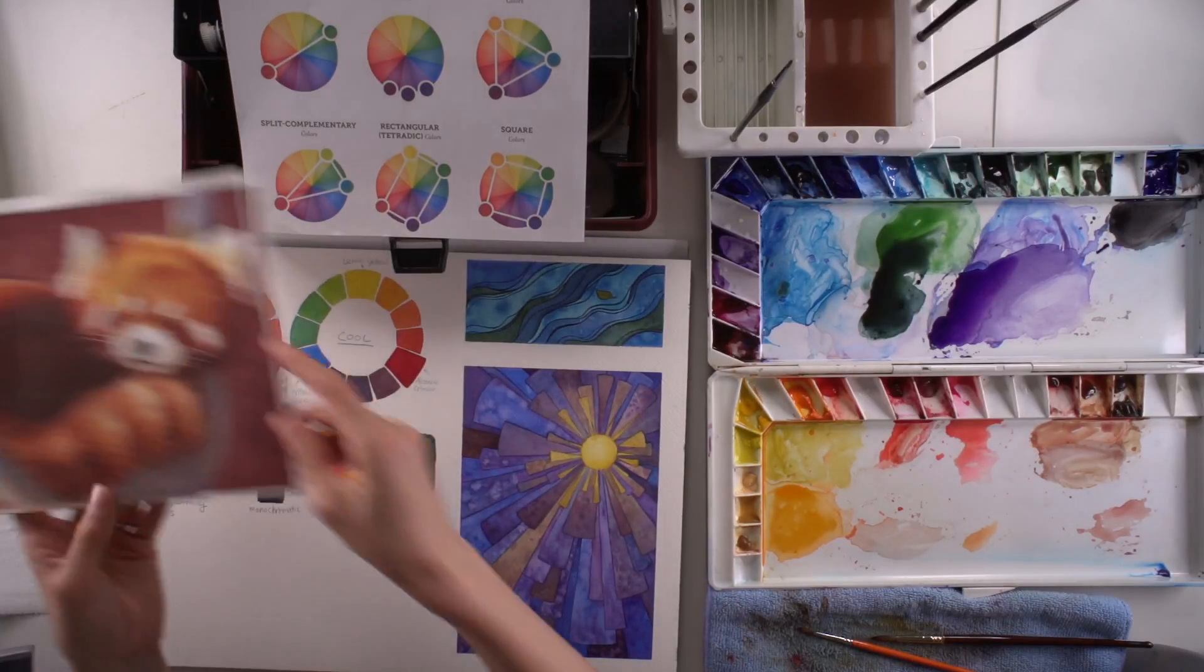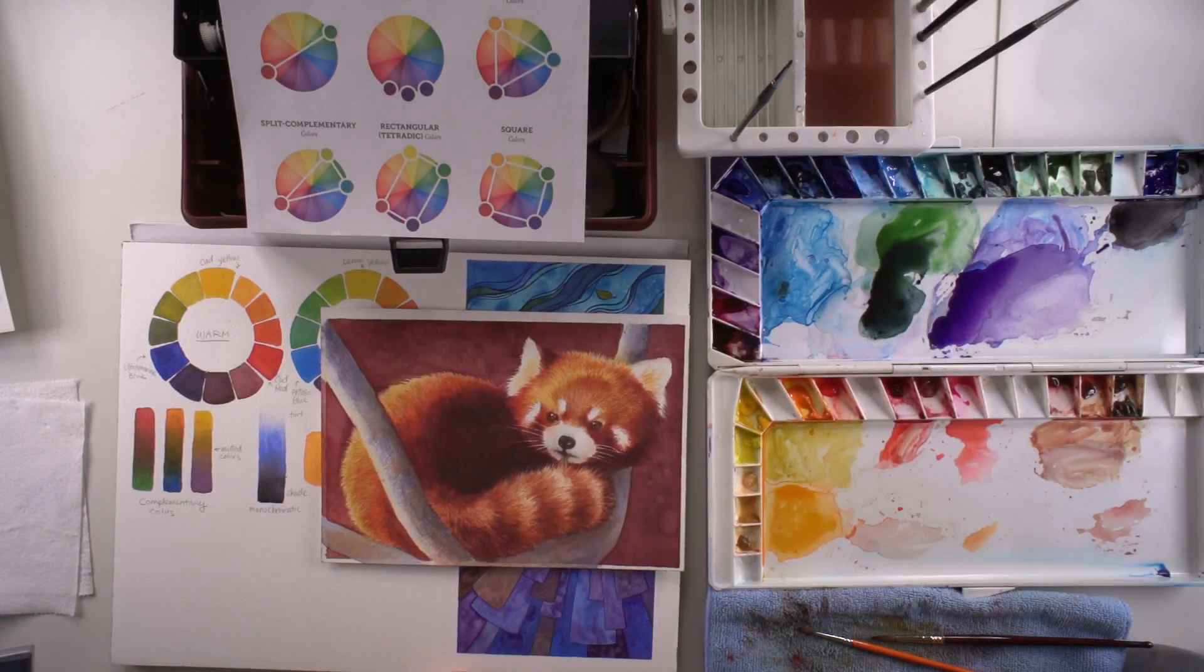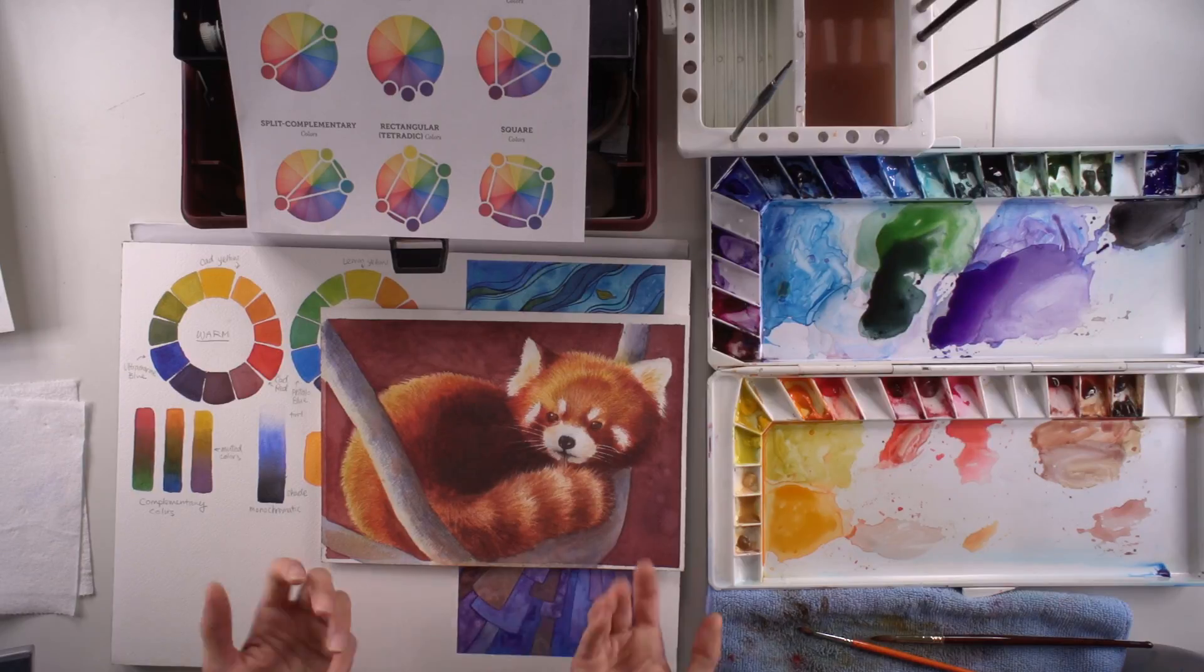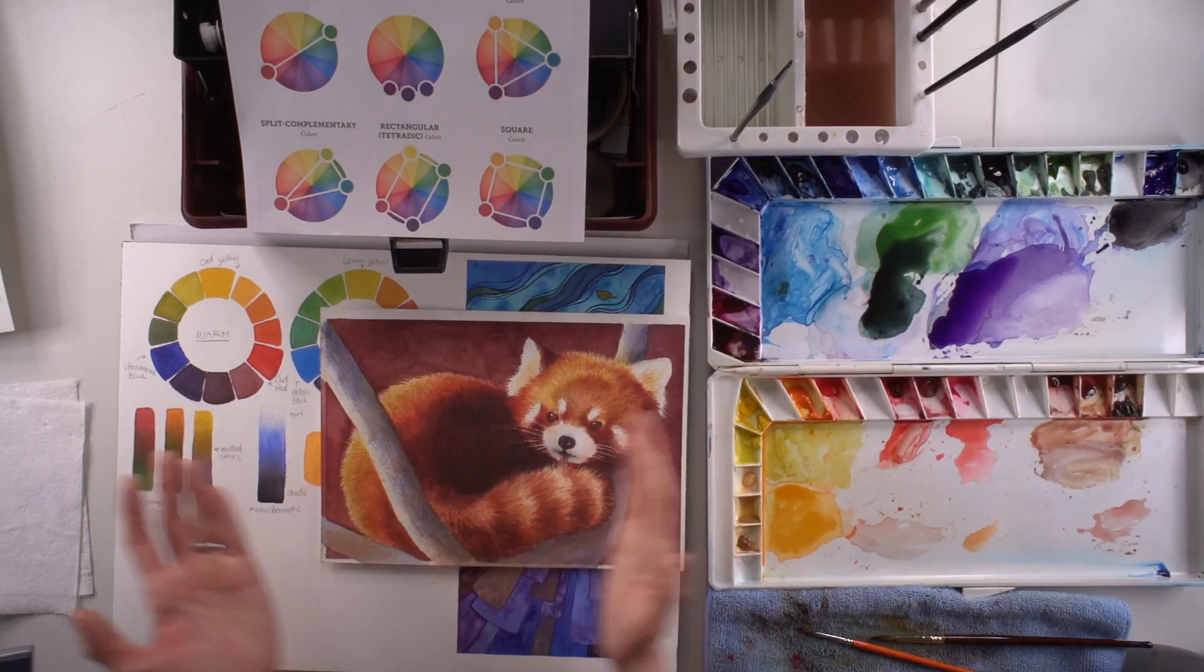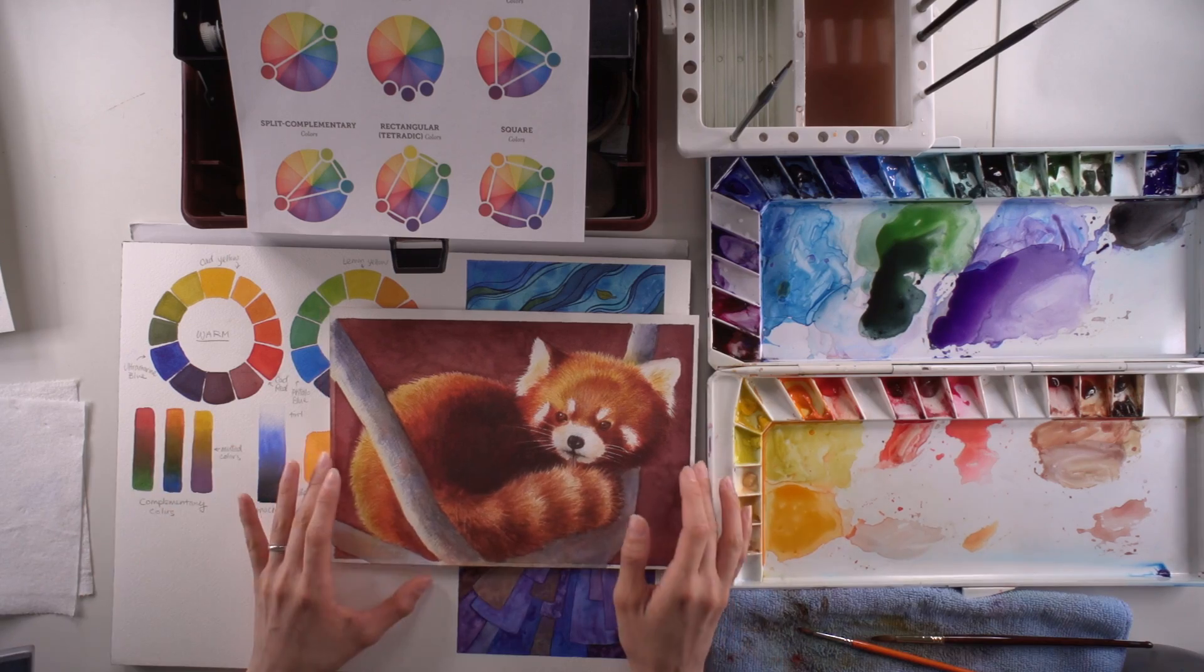I'll show you another example with analogous colors. This is a red panda. All the colors I use are yellows, oranges, and red, all the way up to red violets. I probably use about four colors in here, so it's a very harmonious piece.